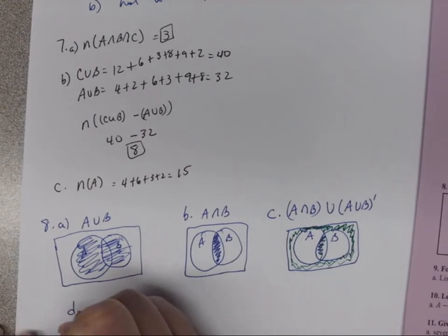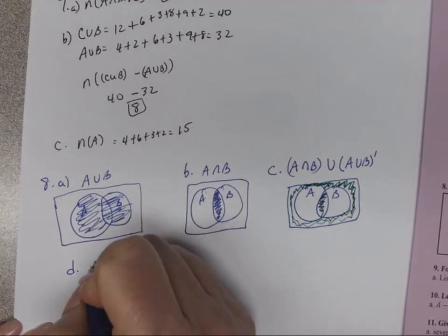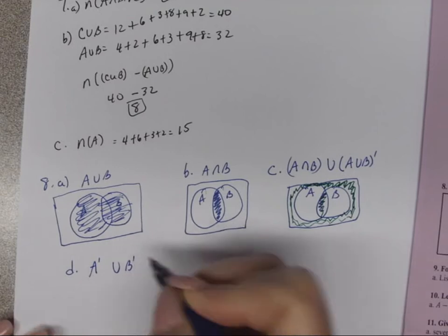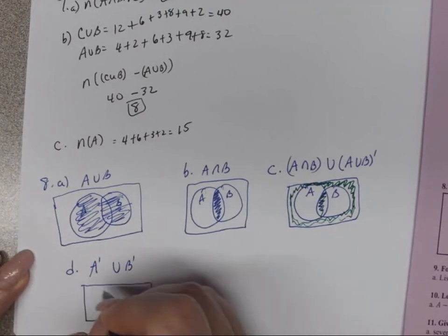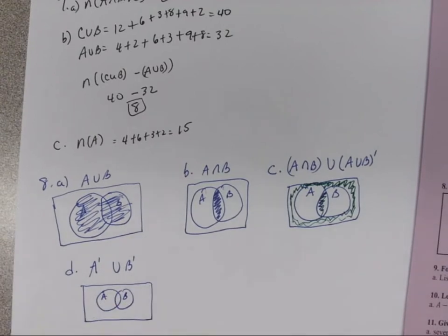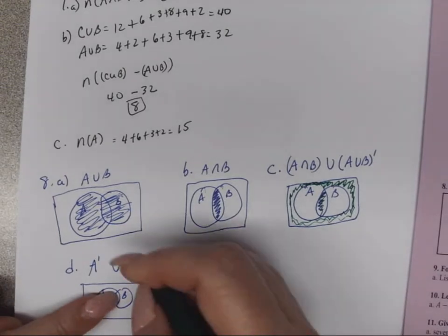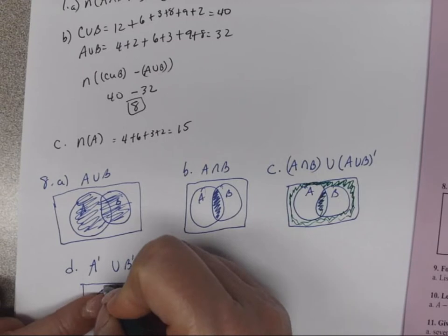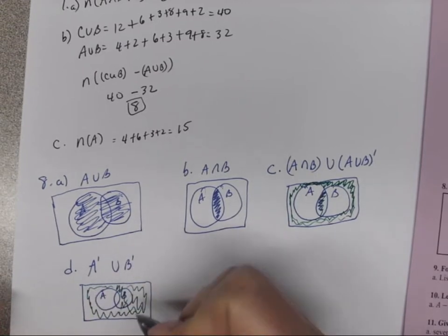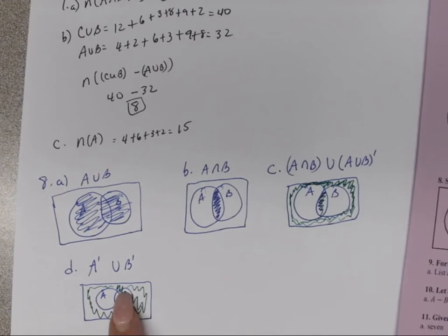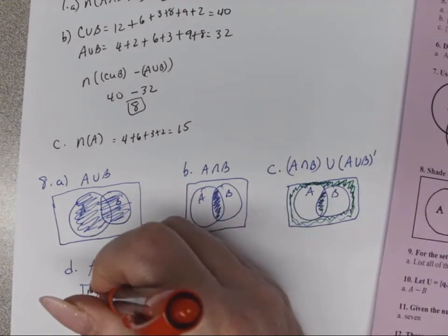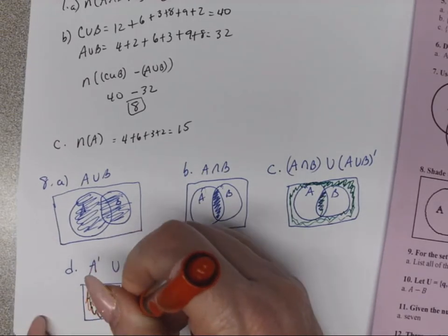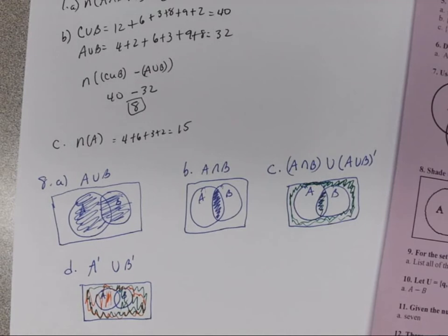For Part D, we have A complement union B complement. A complement is everything outside of A, and B complement is everything outside of B. When we union those, the only unshaded region is where A and B overlap — everything else is shaded.